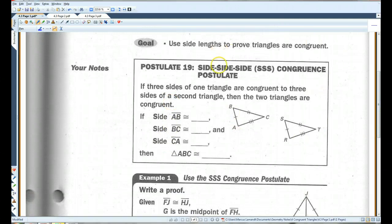This postulate, side, side, side, basically says if you have three sides in one triangle congruent to three sides in another triangle, then the triangles are congruent.